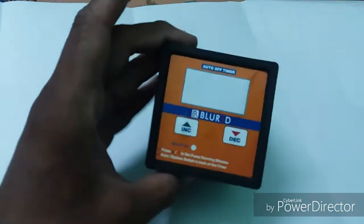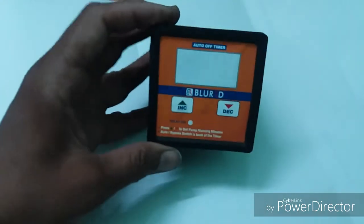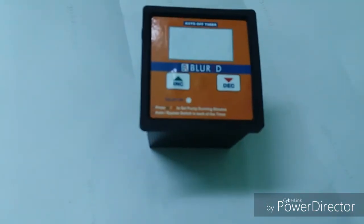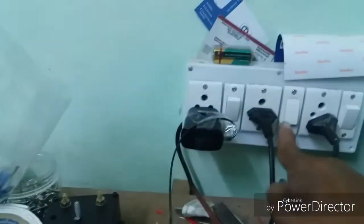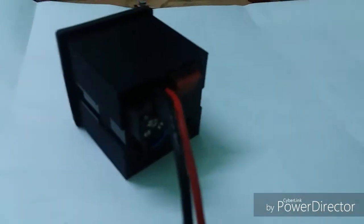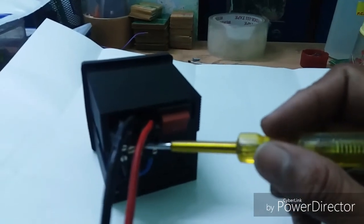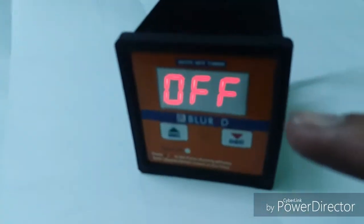The auto off timer is not working. It will be directly - the supply is going from this phase to this phase. So now I am going to show the incoming supply. This is the phase supply, the incoming phase. This is the neutral wire. This is the outgoing phase supply.